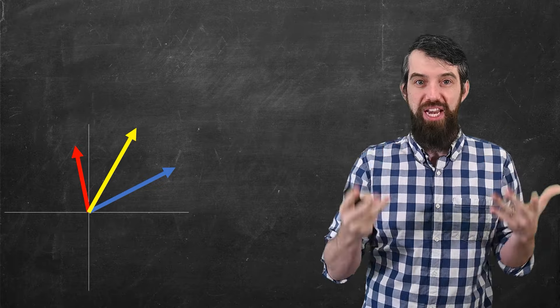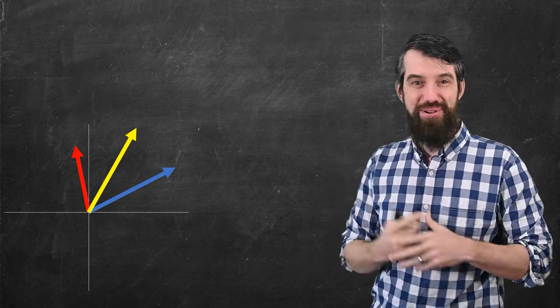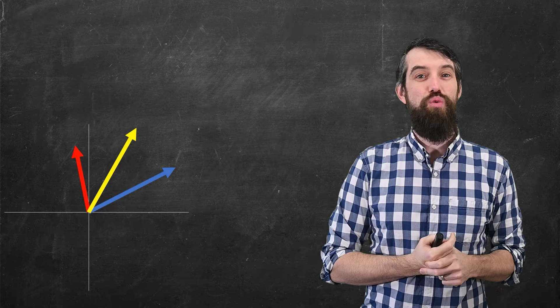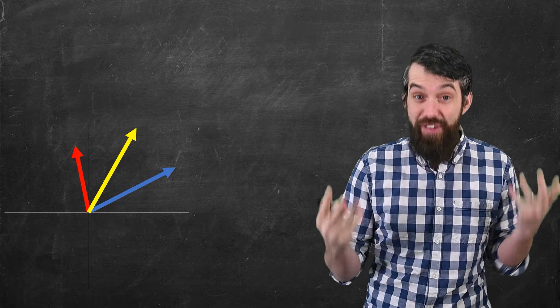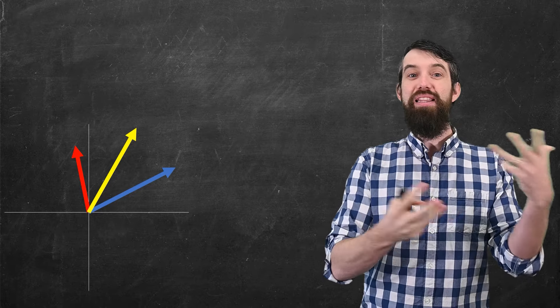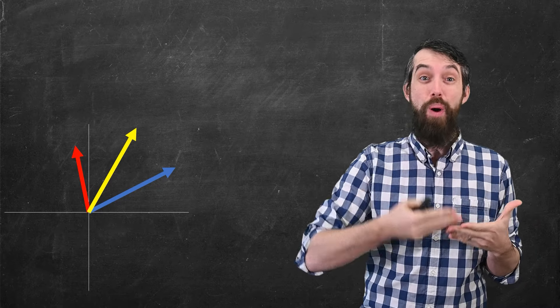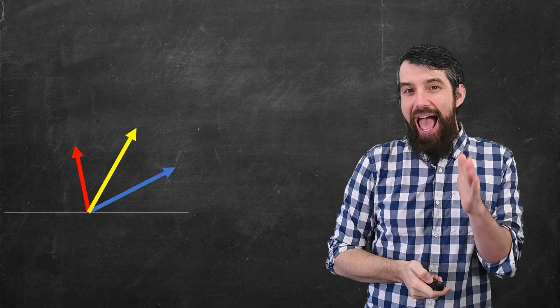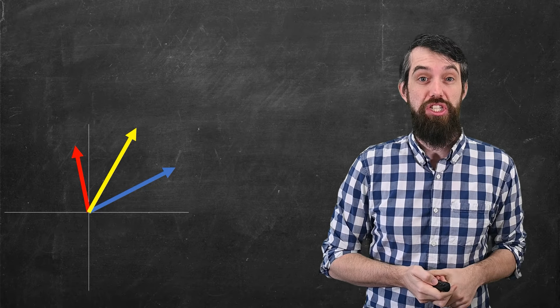To help motivate this, let me take a geometric viewpoint from linear algebra. These are vectors now, not functions, but they'll play a similar role. You could ask the question, what does it mean for three vectors to be linearly independent? The idea is, I could take a linear combination of those vectors, which means adding them together, possibly with scaling factors.